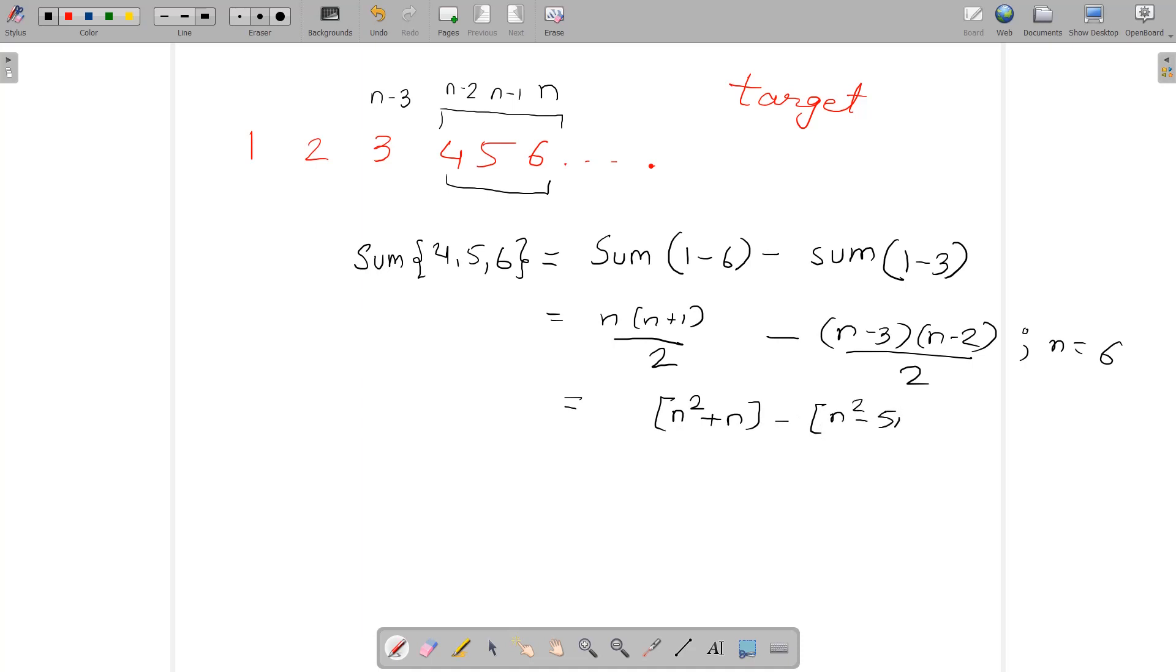If you simplify further you'll get (n² + n - n² - 5n + 6)/2, which equals 3(n-1). This is what you're going to get. Now this value must be equal to the target.